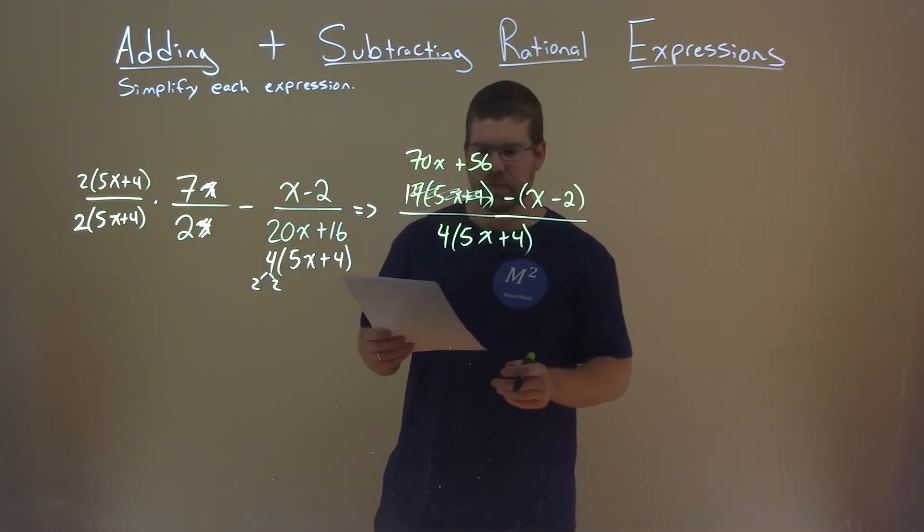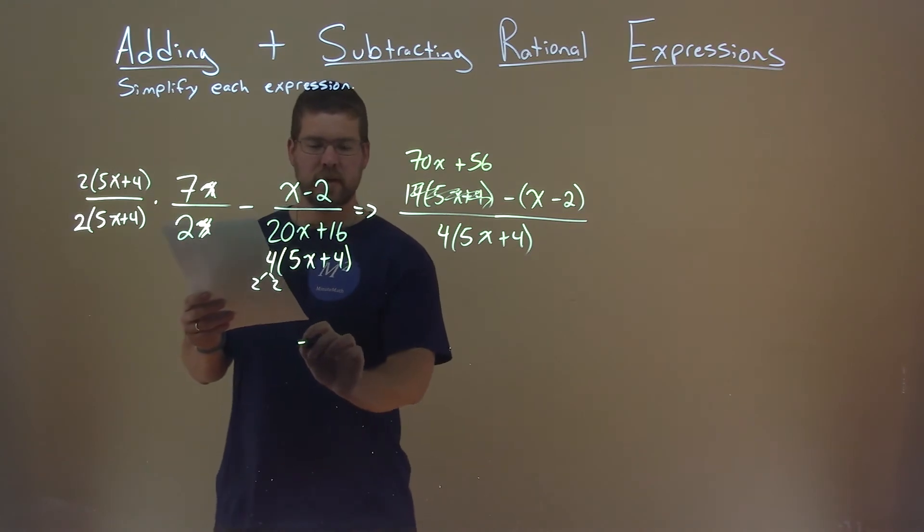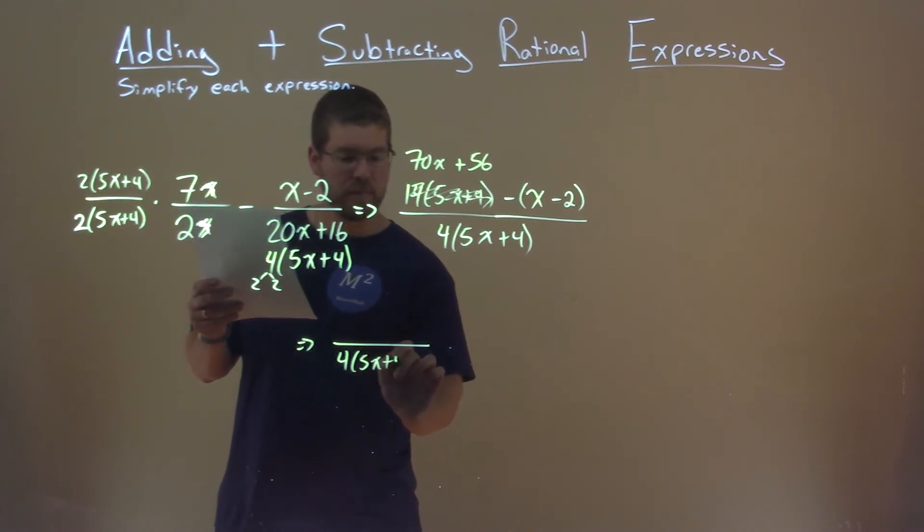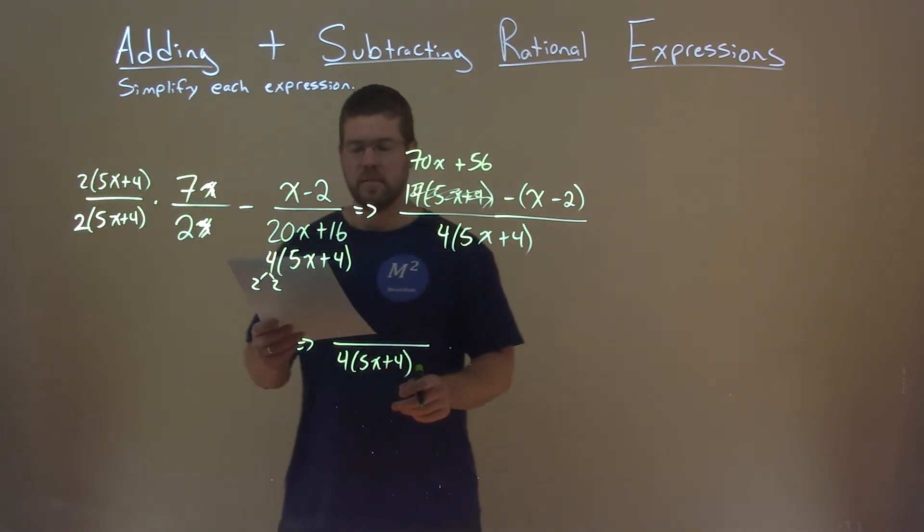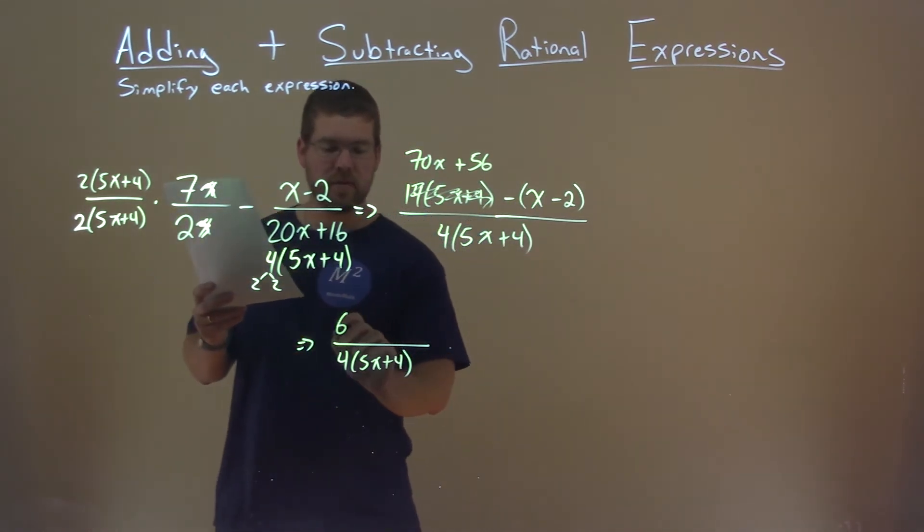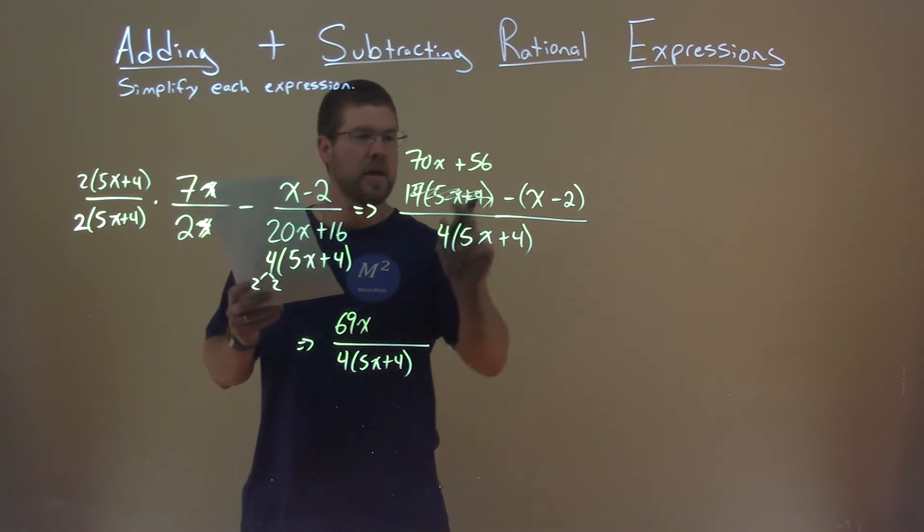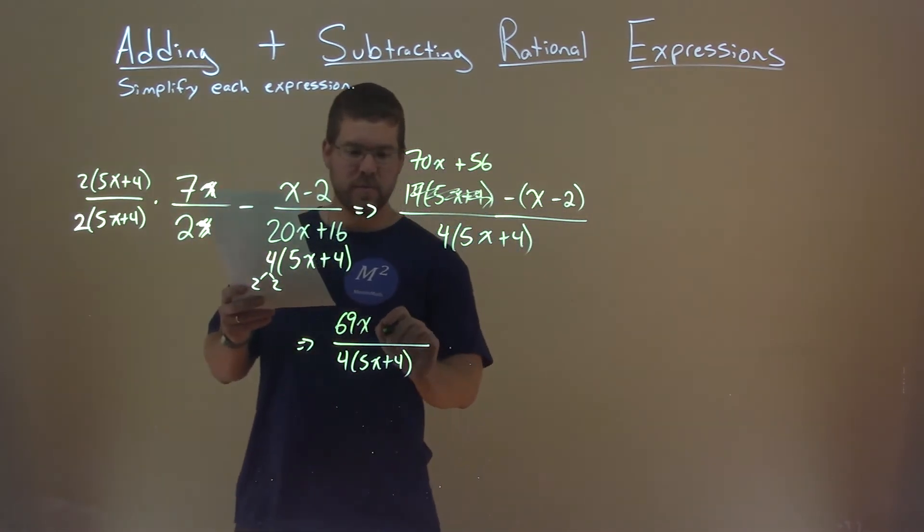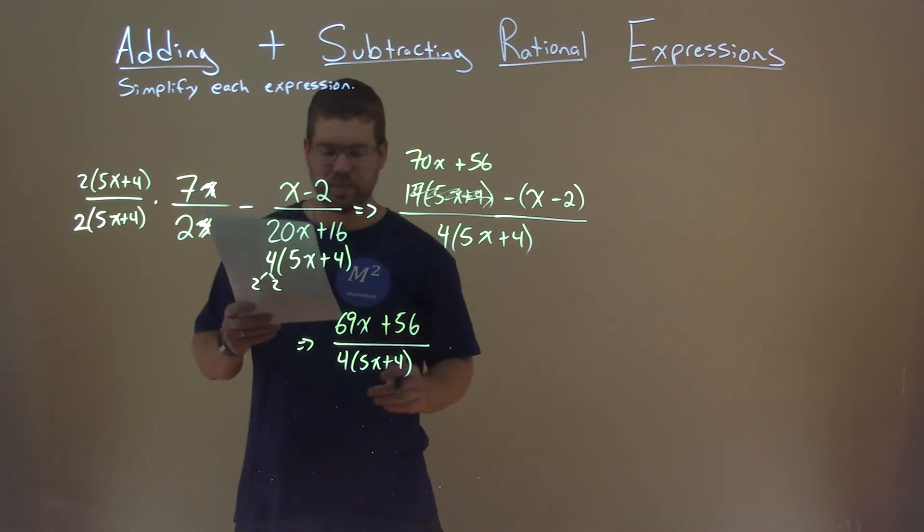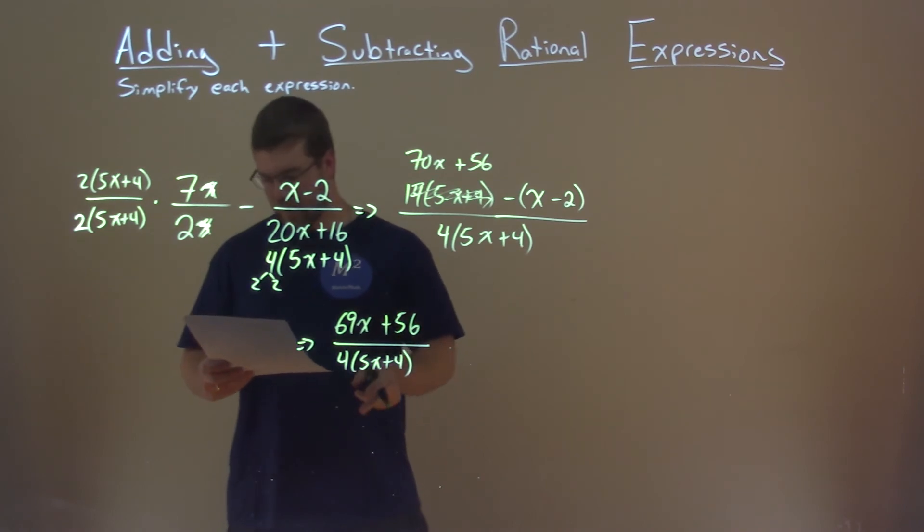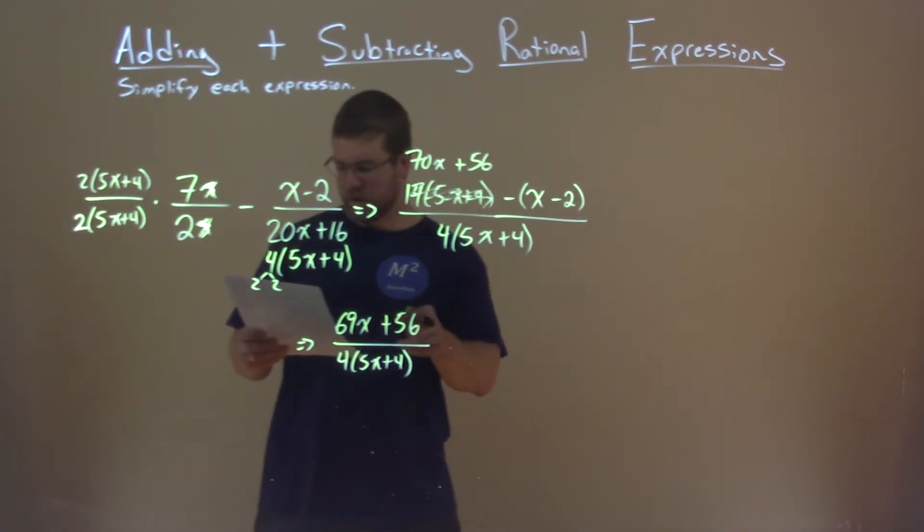So now let's combine and see if we can get some like terms and be done here. Denominator stays the same, 4 times 5x plus 4. But the numerator, we can combine our like terms here. 70x minus x is 69x. And 56 minus a negative 2 is like adding a positive 2, and that's plus 58. And there we actually have our final answer. 69x plus 56 divided by 4 times 5x plus 4.